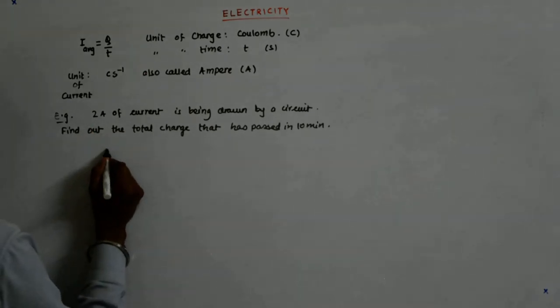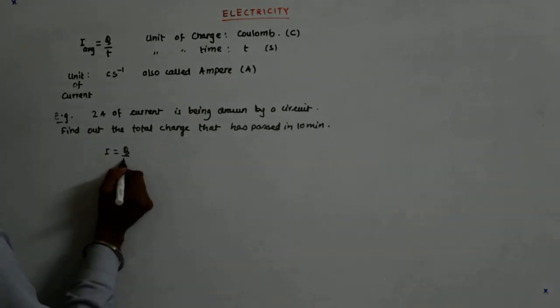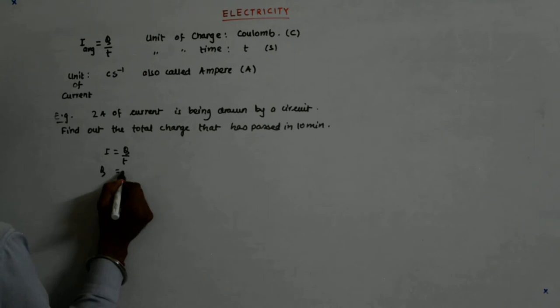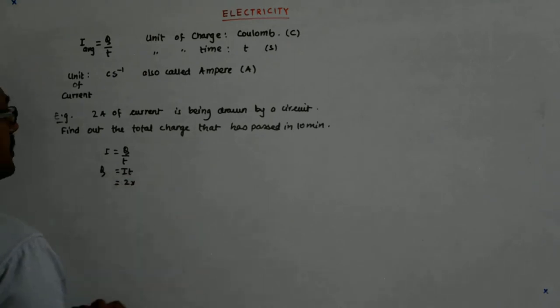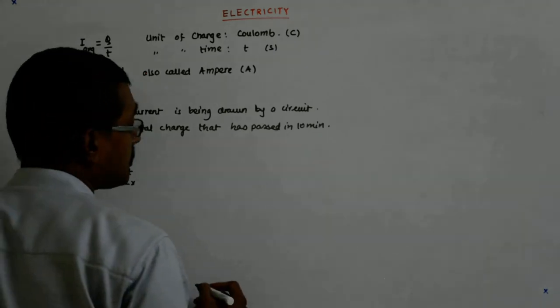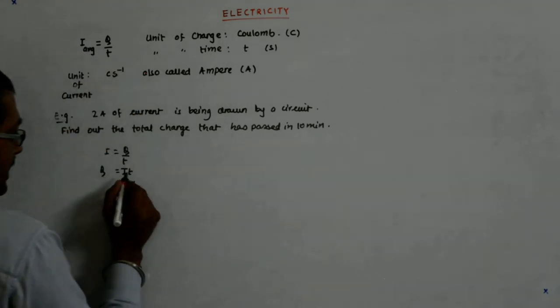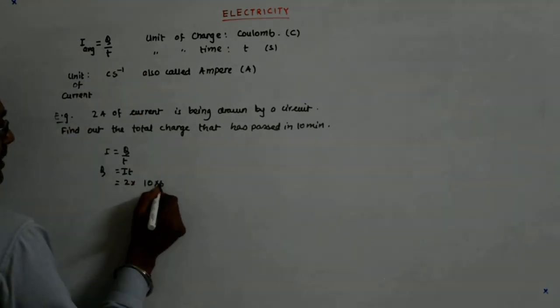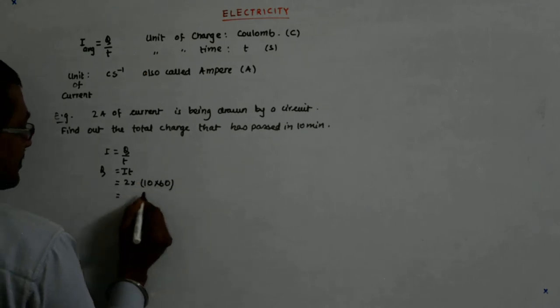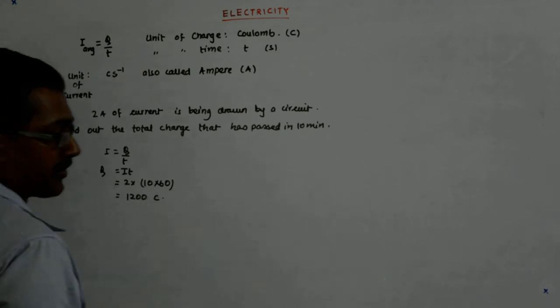So I know i is equal to q upon t, so q is equal to i into t. i is 2, time has to be converted into second, so 10 minute is equal to 10 into 60, that is 600 seconds, into 2 is 1200 coulombs.